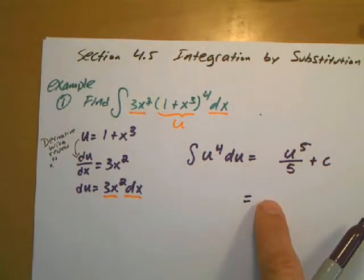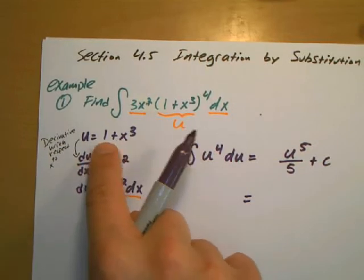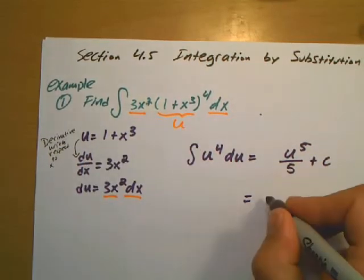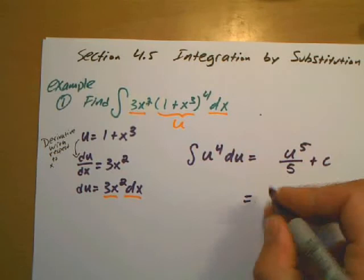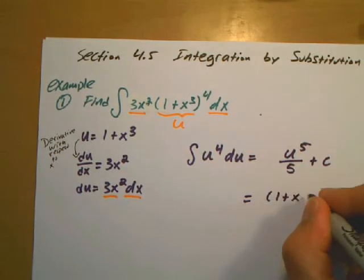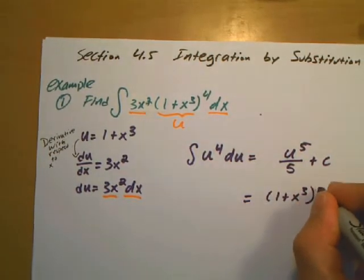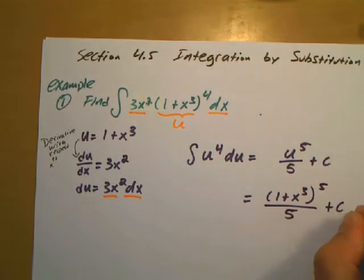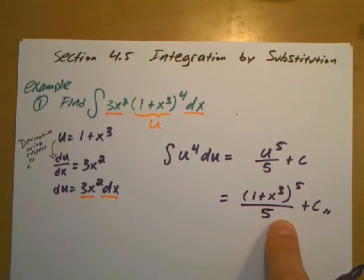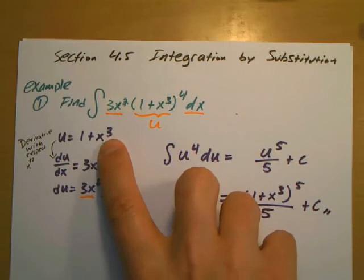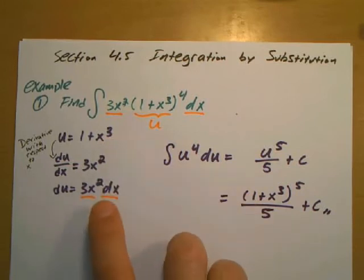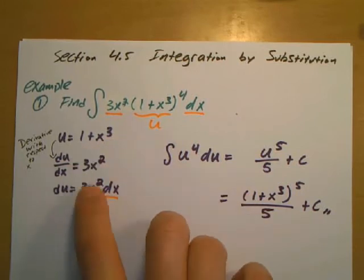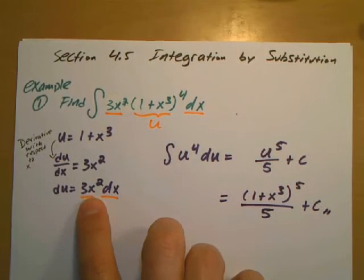The last thing is to put everything back in terms of x. So u gets replaced: it's (1 plus x to the 3rd) all to the 5th power, all over 5, plus C. And this is the anti-derivative. The whole process is just identifying the inside part and making sure you have the derivative of the inside in the other part of the problem.